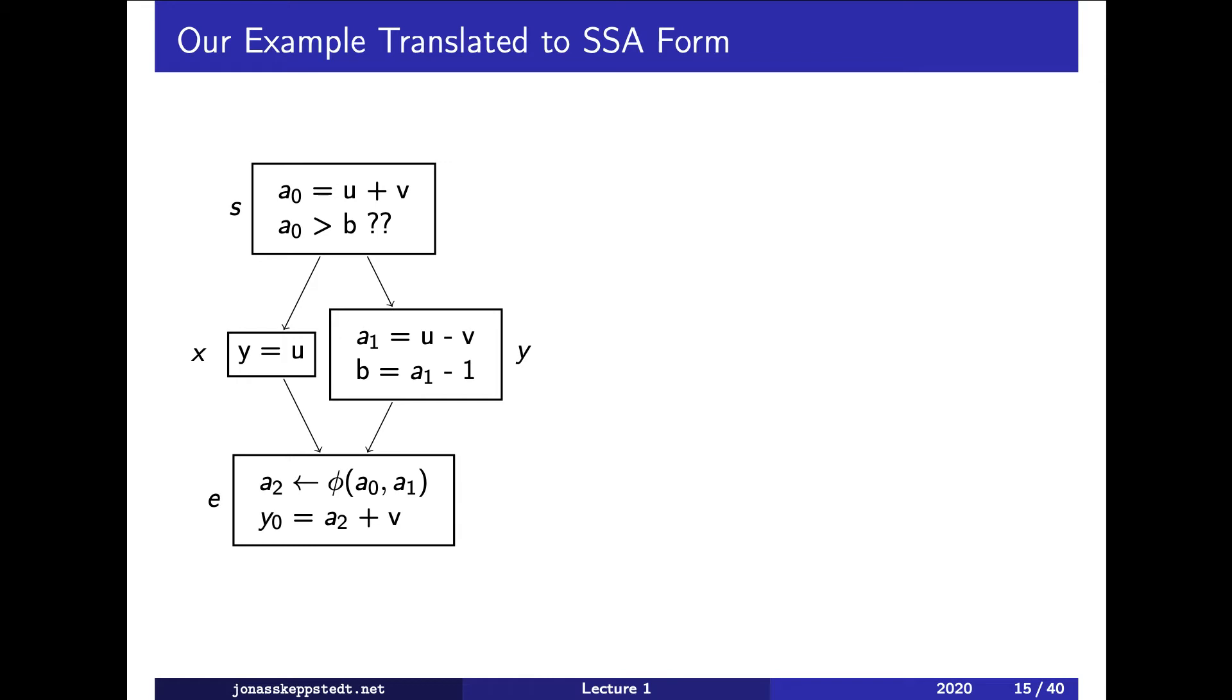It's easy to place phi functions to make this correct. Basically, just put a phi function whenever two branches join in one basic block, but that will require a lot of memory. And it becomes extremely inefficient.